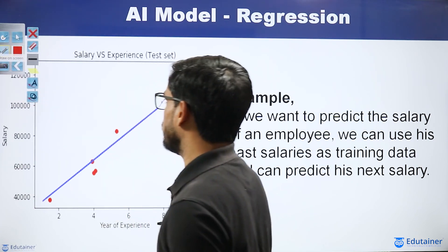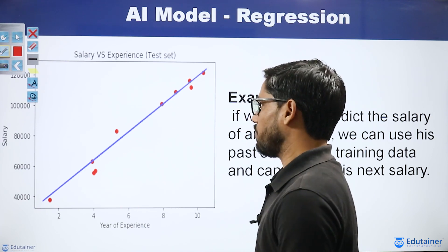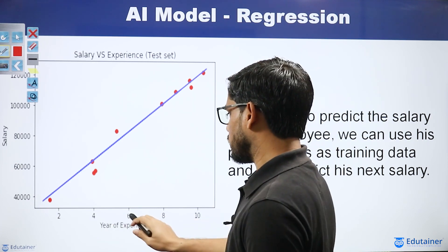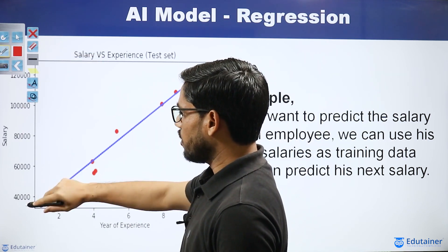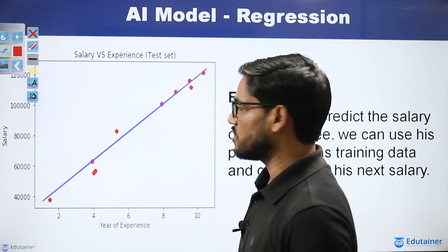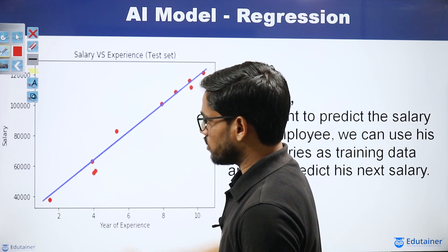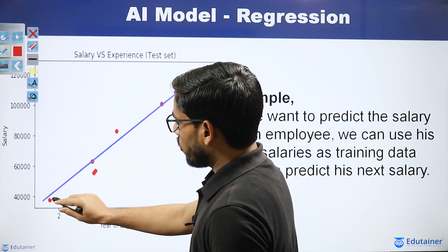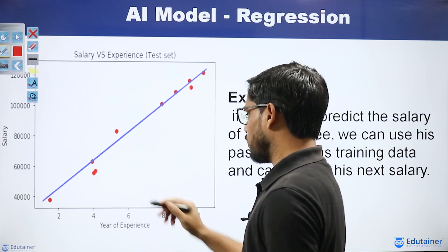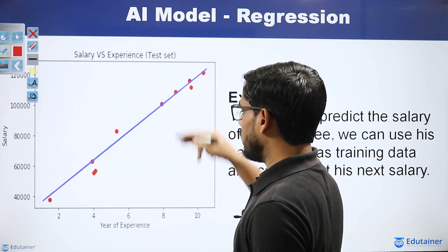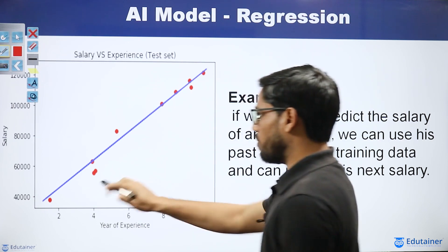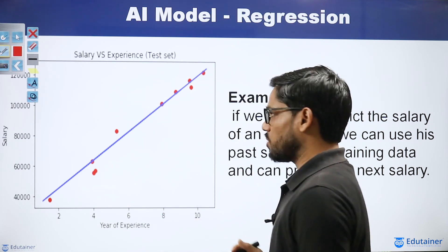In the graph, the X-axis has years of experience: 2, 4, 6, 8, and 10 years. The Y-axis has salary values: $40,000, $60,000, $80,000, $100,000. If an employee has 2 to 3 years of experience, his salary is $40,000 to $50,000. With 4 years experience, salary is above $60,000. With 6 years, above $80,000. With 8 years, $100,000. This is the prediction based on the regression model.